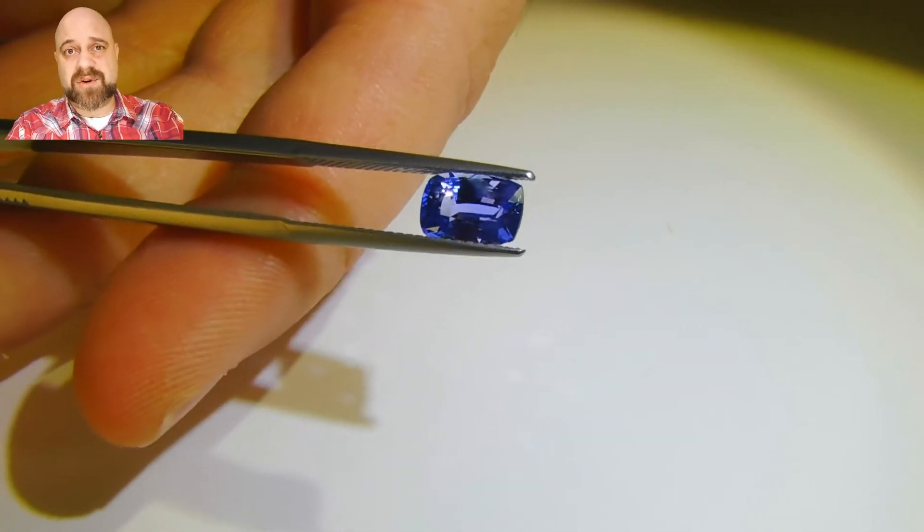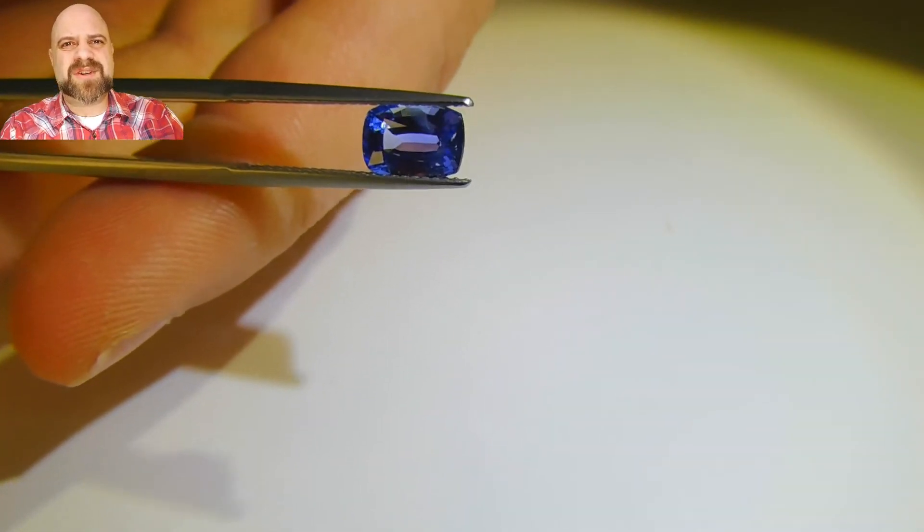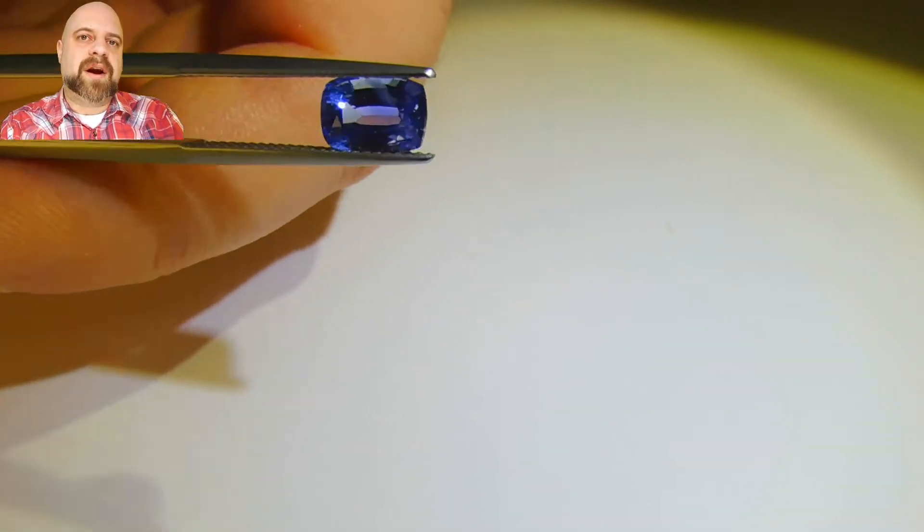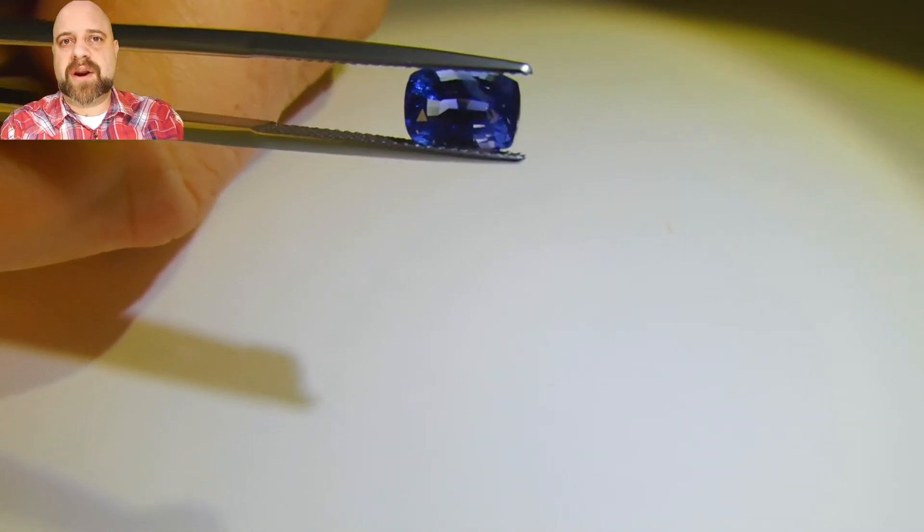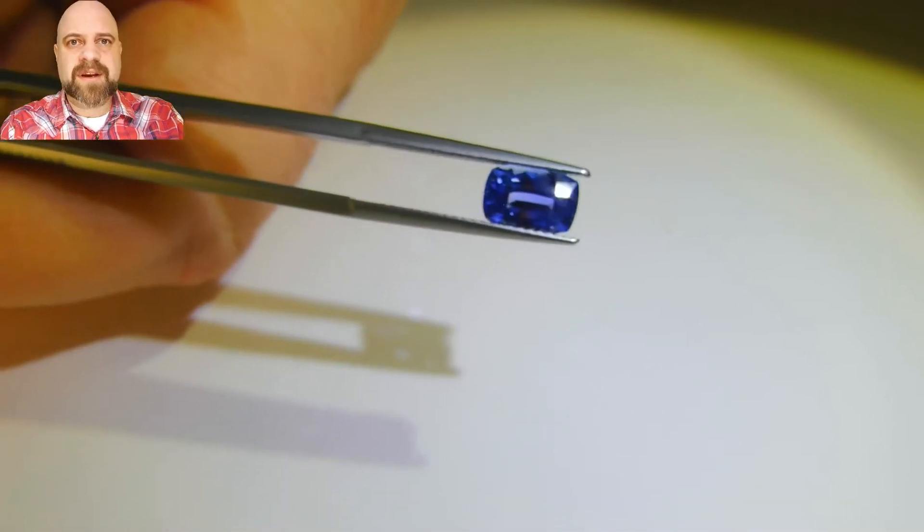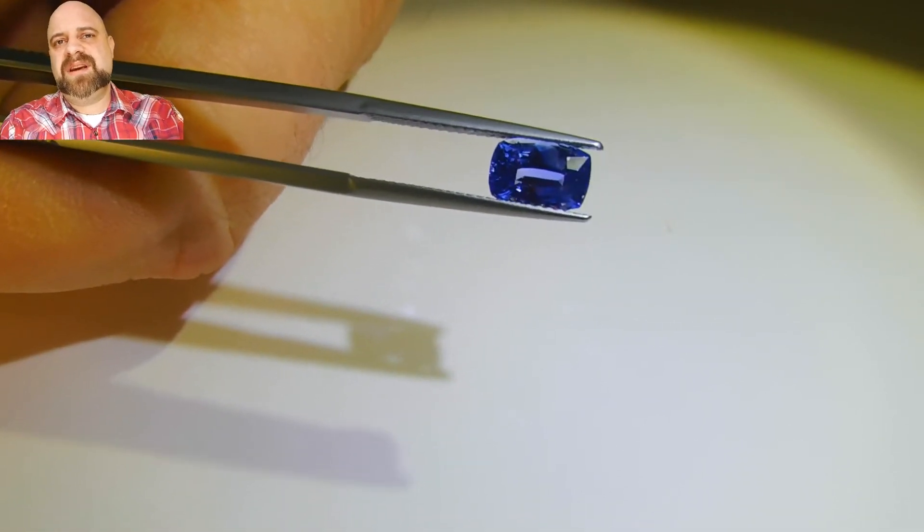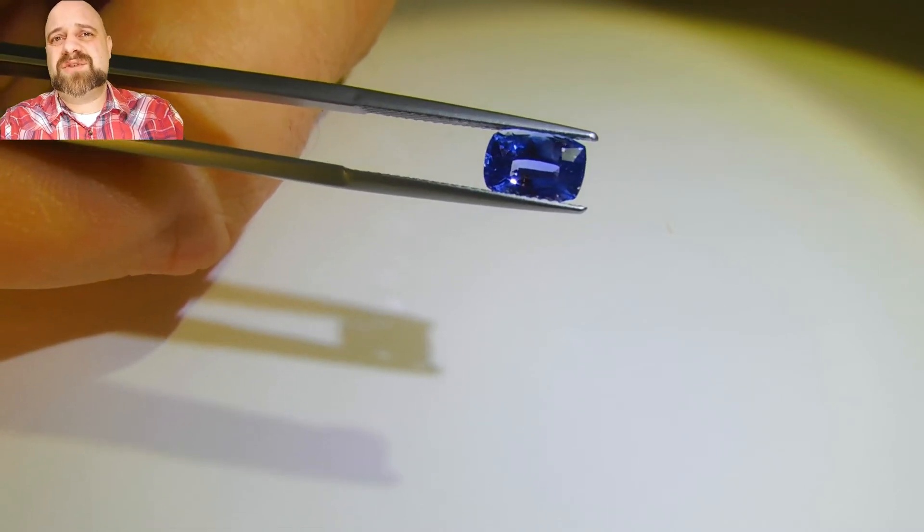1.94 carats, it's a two carat stone. If you're looking for a two carat stone, in colored stones, it's not quite the same as diamonds where you say a two carat stone. In a diamond, a 1.95 carat diamond is a 1.95 carat diamond. In colored stones, if we say two carats, we say it's 190 to 210, 215, 220.